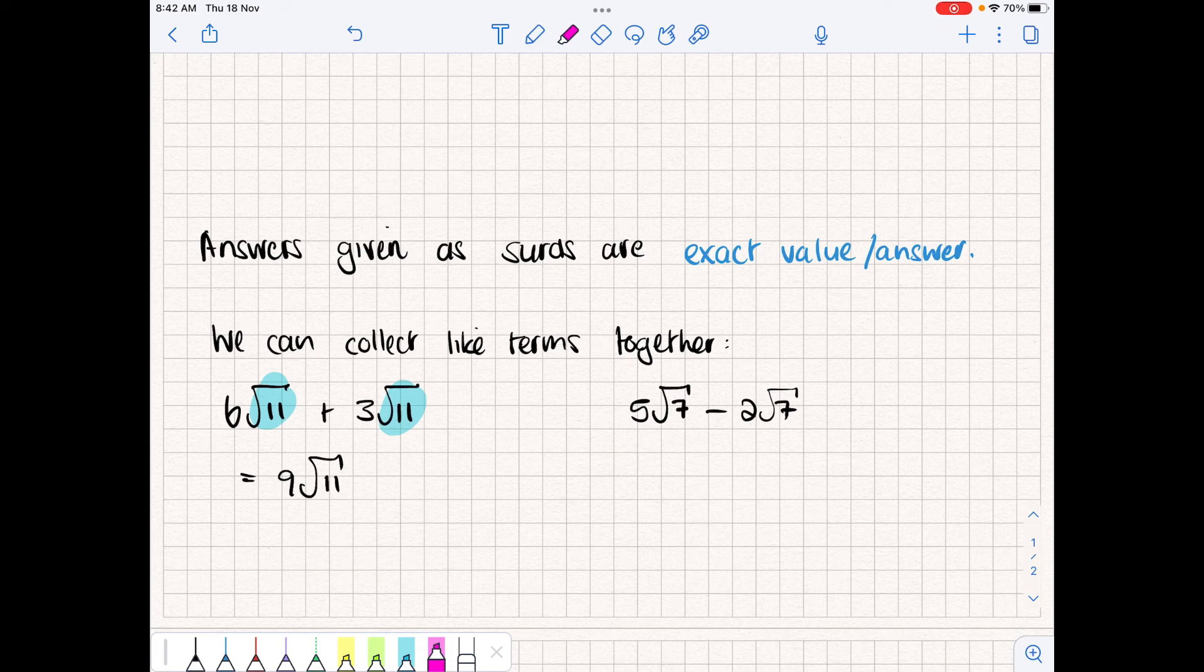And in the same sense, if we have the same surd here, we can look at the coefficients in front. And just like any variable, we can subtract, in this case, the two numbers. So we'll have 3 square root of 7.